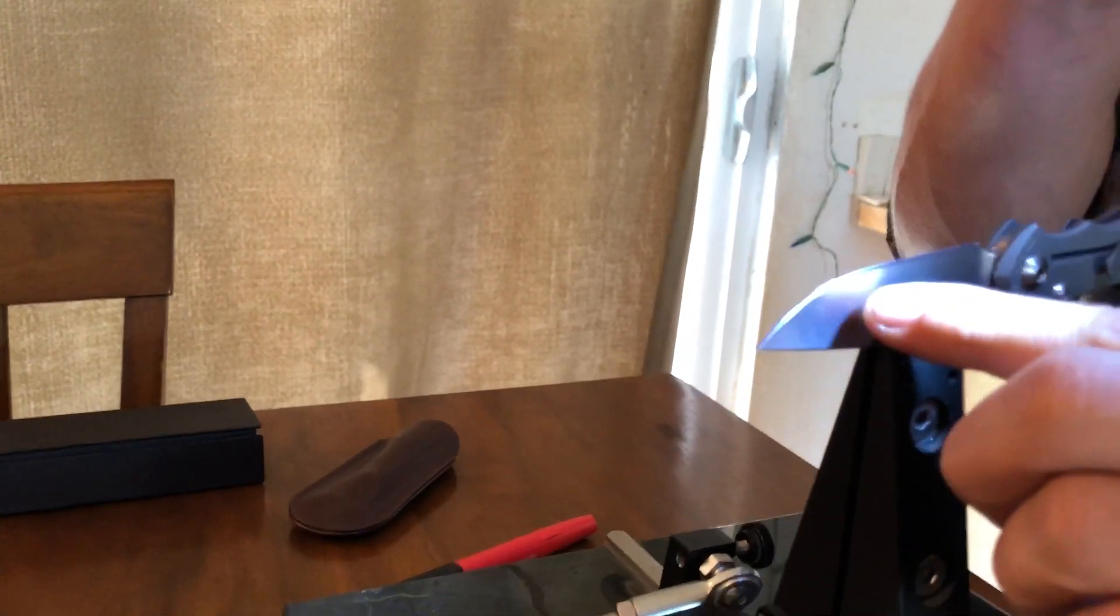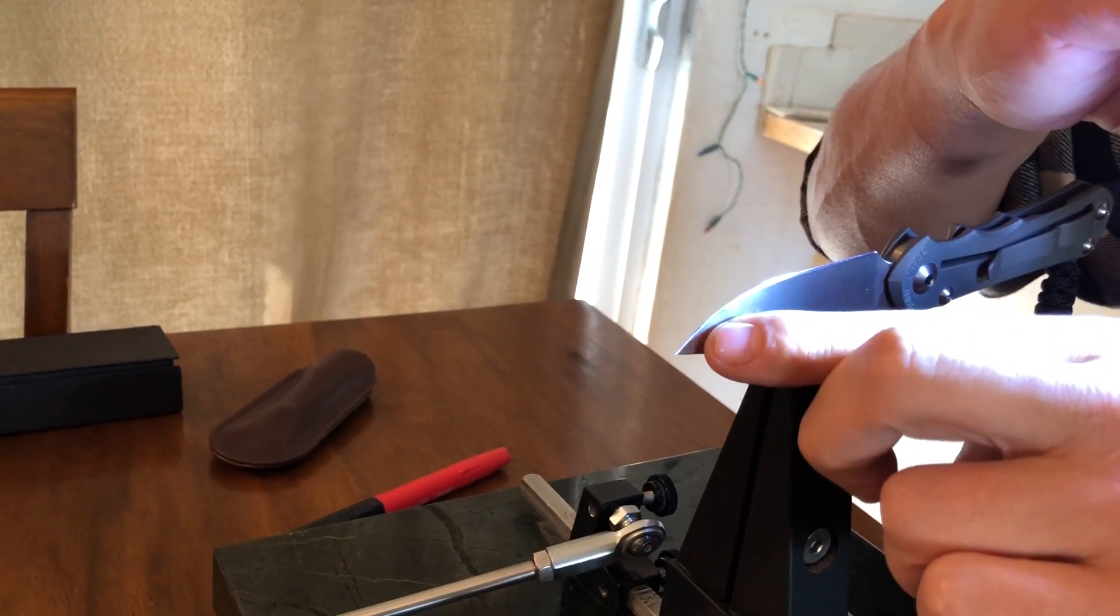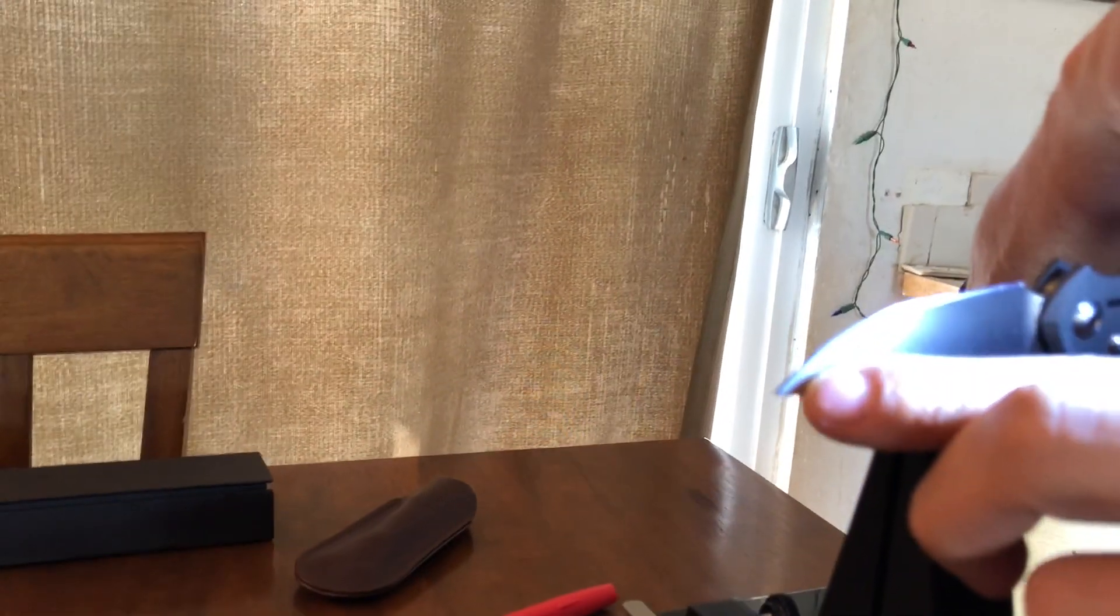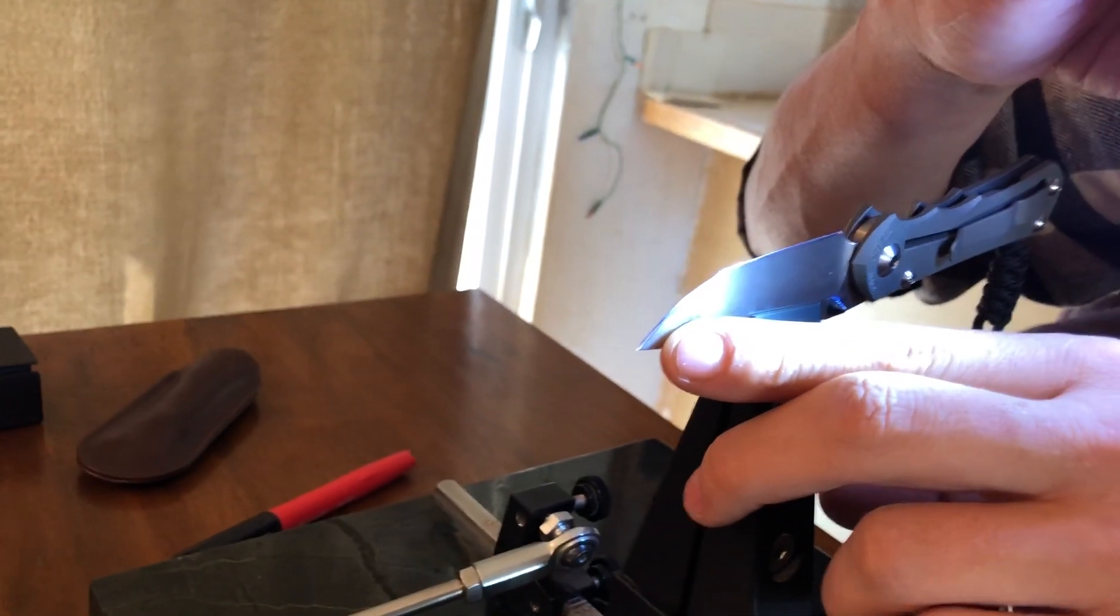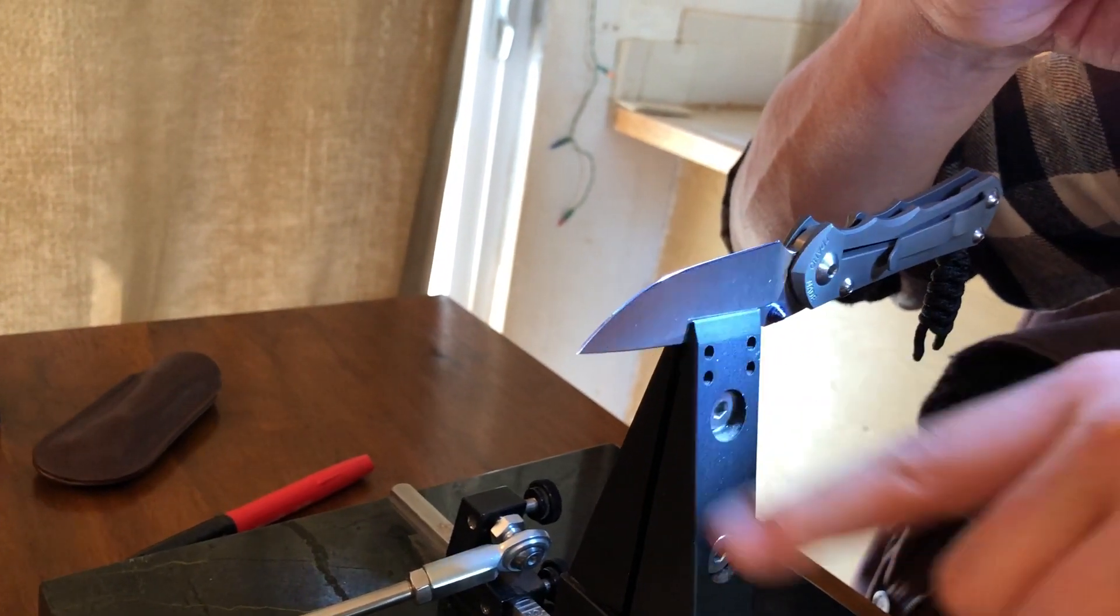You see how it's being removed at the very edge of the knife here and then it slopes down into the shoulder of the bevel. That lets me know that my knife is positioned too far backwards so I want to position the clamp a little bit closer to the tip.